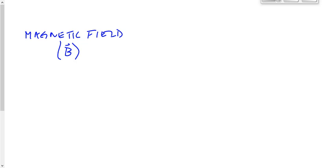Do you remember what a ferromagnetic material is? A ferromagnetic material is not necessarily a magnet, but something that can become magnetized. Do you remember what a domain is? It's a tiny little region inside the ferromagnetic material. The domains are aligned when it becomes a magnet, and they're pointing in random directions when it's not a magnet.